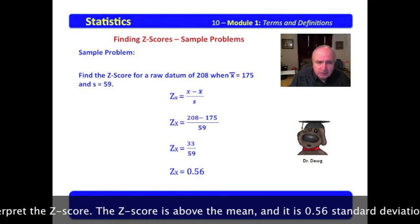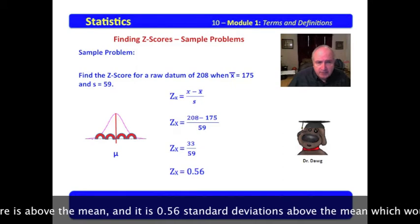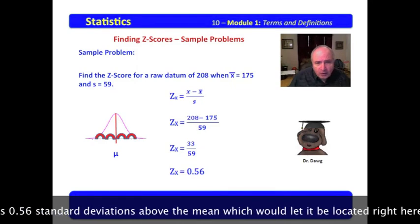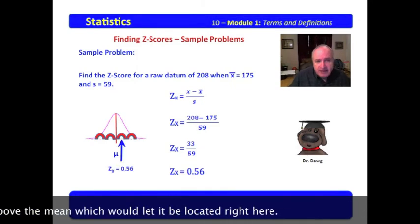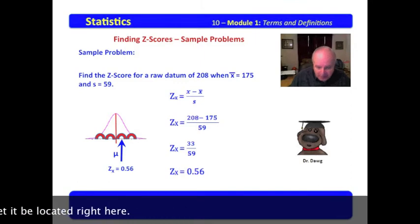Again, we would interpret the z-score. The z-score is above the mean, and it's 0.56 standard deviations above the mean, which would let it be located right here.